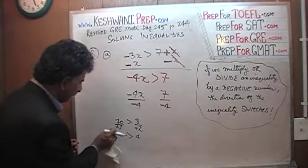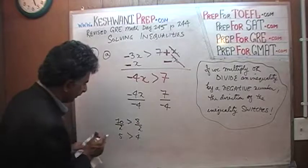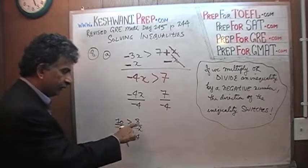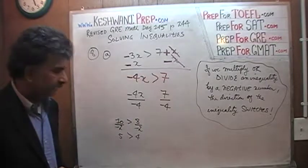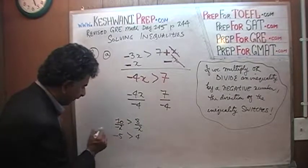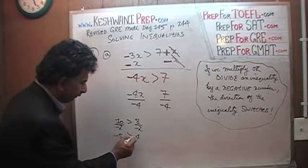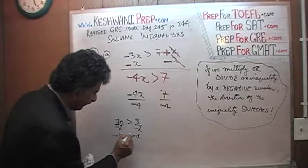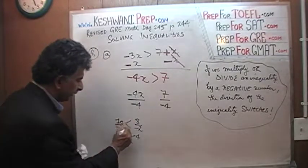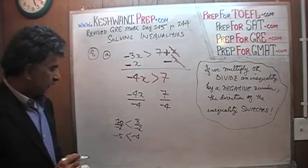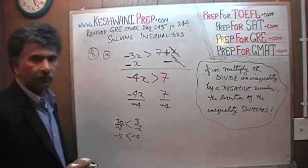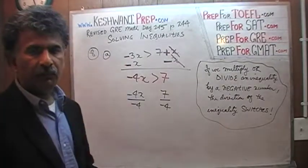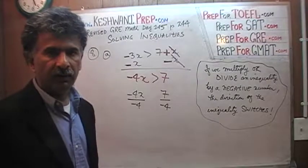But what happens if you were to divide by negative 2? If you were to divide 10 by negative 2 and 8 by negative 2 — even though we are dividing both sides by the same number — 10 divided by negative 2 is negative 5, and 8 divided by negative 2 is negative 4. Negative 4 is no longer smaller than negative 5; negative 4 is in fact larger than negative 5. The direction of the inequality switches — negative 5 is now smaller than negative 4.